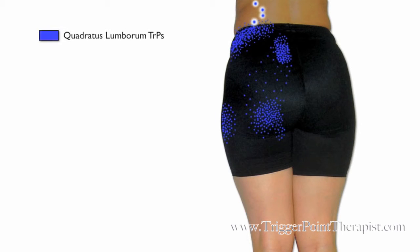Let's take a look at the trigger points involved with low back pain and sciatica. First, represented in blue, we have the quadratus lumborum trigger points, which can cause pain across the lower back and into the gluteal fold and into the hip regions.